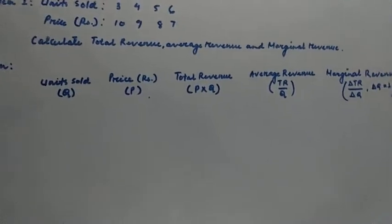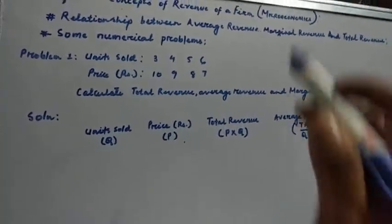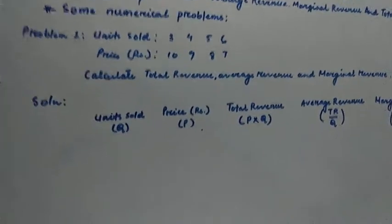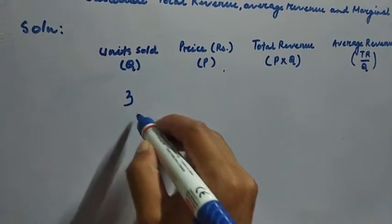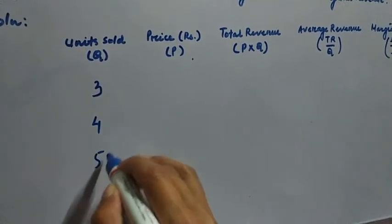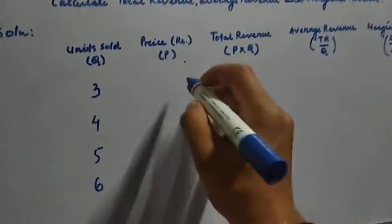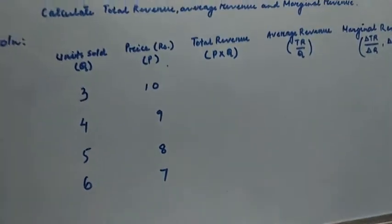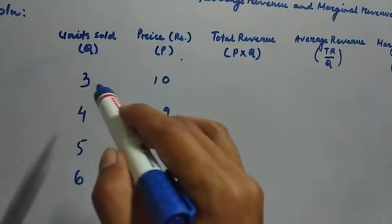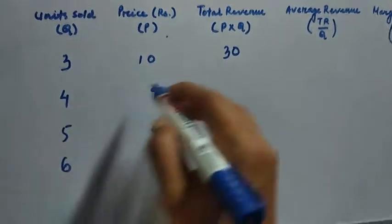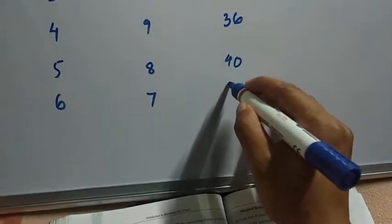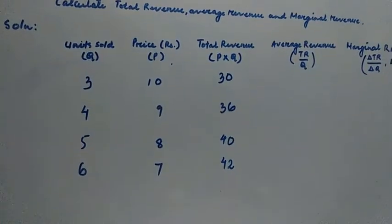With the given table, let us find total revenue, average revenue, and marginal revenue. Units sold are given as 3, 4, 5, and 6. Price is given as 10, 9, 8, and 7. Total revenue is price into quantity: 3×10=30, 4×9=36, 5×8=40, and 6×7=42.